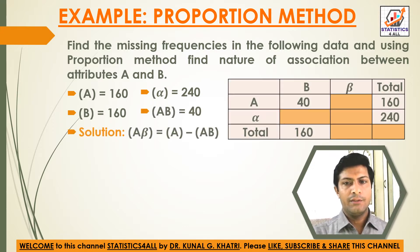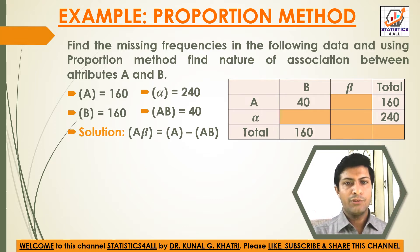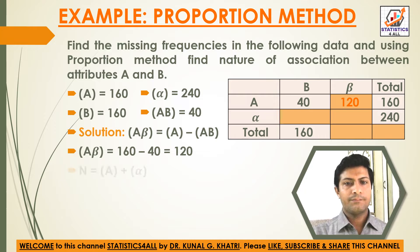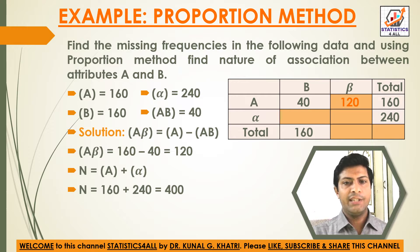Now let's start the solution. All the data is written in 2×2 contingency form. A_beta = A minus AB. So A_beta = 160 minus 40 = 120. Capital N = A plus alpha. A = 160, alpha = 240, so N = 160 + 240 = 400.